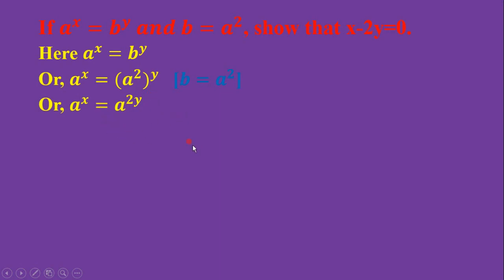And according to exponential equation rules, when bases are the same, then powers will be the same. So x = 2y. By solving, x - 2y = 0, which we have to prove. Thank you for watching.